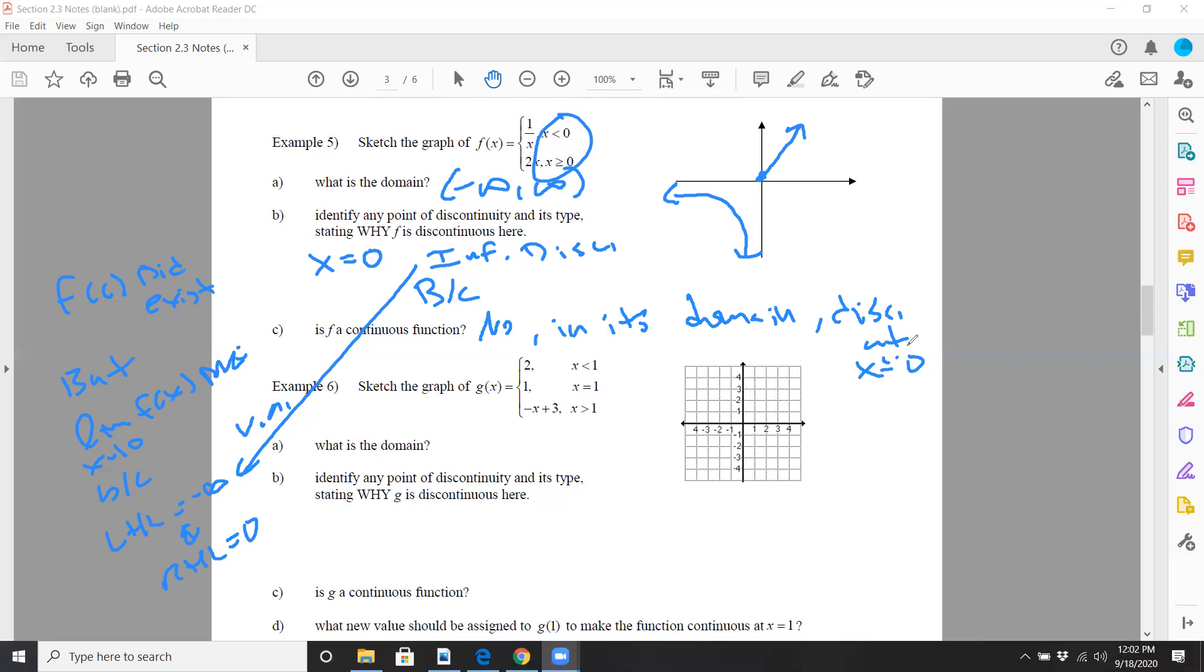Okay, let's take a look at the next one. Go ahead and try graphing that. So let's see here. Two and x is less than one, non-inclusive.